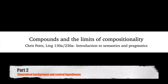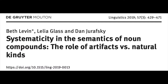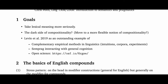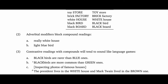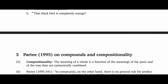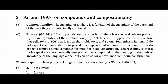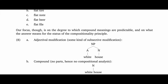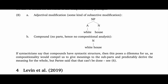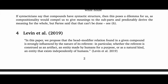Hi, Chris Potts here. This is part two in our short series of screencasts on the paper by Levine et al. called Systematicity and the Semantics of Noun Compounds, the Role of Artifacts vs. Natural Kinds. If you haven't watched part one in the series already, I suggest doing that now because it covers important background and motivations. This screencast is going to dive right into the core hypotheses of the paper.